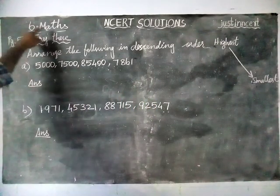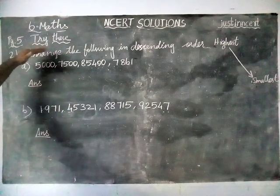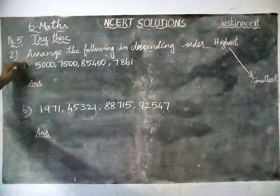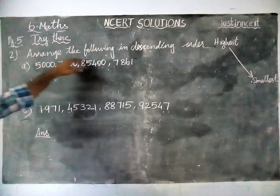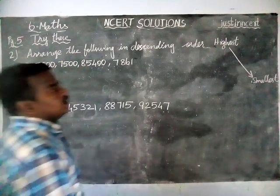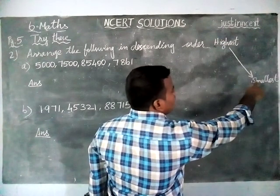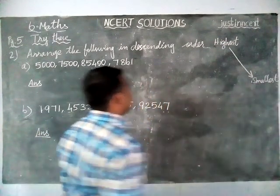Today, 600 Maths, page number 5, Try This, 2nd question: Arrange the following in descending order. The meaning of descending order is from highest value to smallest value.